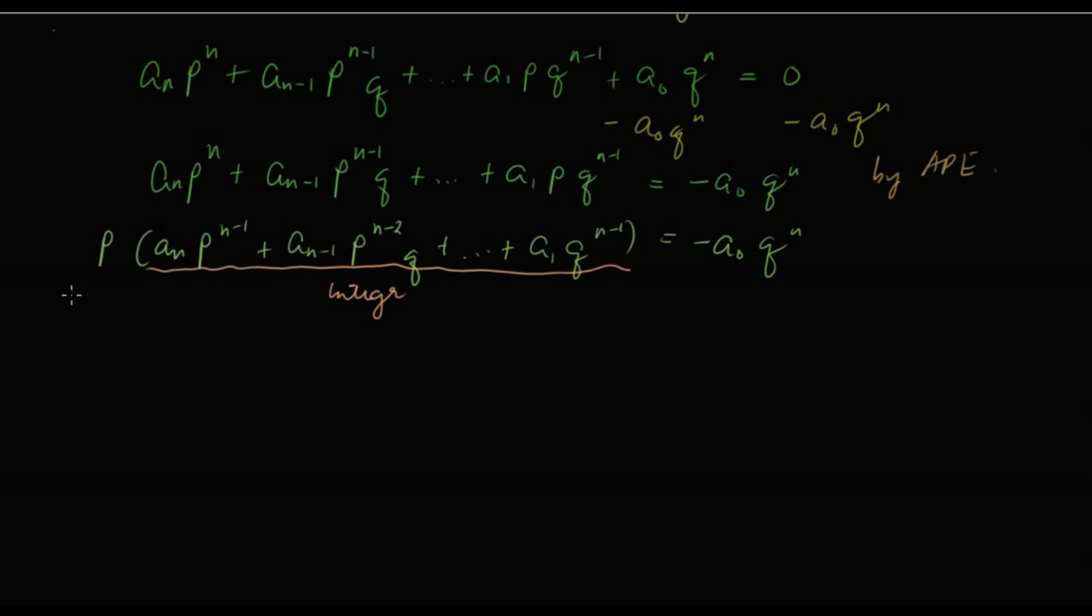So p times an integer is equal to this one times this one. Now, for instance, if 2 times 10 is equal to 4 times 5, if 2 is a factor of this left side, then 2 must also be a factor of the right side. If it's a factor of the left side, it must also be a factor of the right side, because they're equal. So by equality, that is correct.